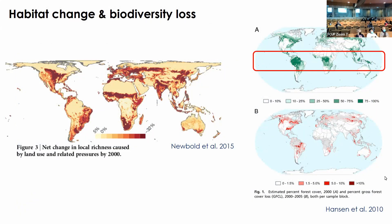Habitat loss and fragmentation caused by habitat change is one of the main drivers of biodiversity loss worldwide. I'll be focusing on tropical forests, which have an important role here because they harbor the highest levels of biodiversity worldwide. In this talk, I will be focusing on two tropical forests: one in the Brazilian Amazon and another in Southeast Asia.